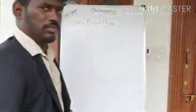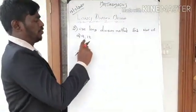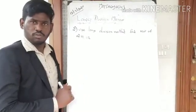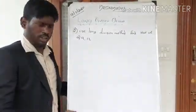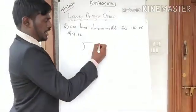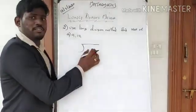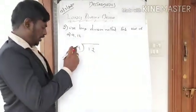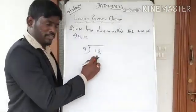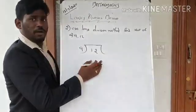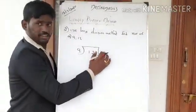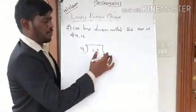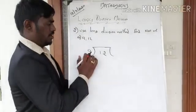Using the long division method, let's find HCF of 9 and 12. This is different from the prime factorization method — it is a normal division. Always put the bigger number inside: 12 is bigger, so 12 is the dividend. The smaller number 9 is the divisor. Normally we write the quotient on top, but for this type of sum we write the quotient on the side.